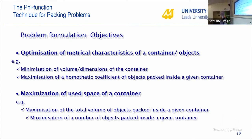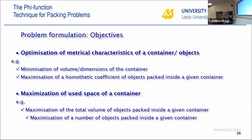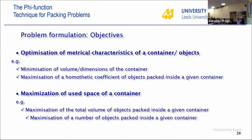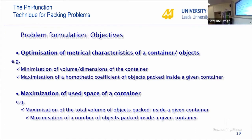In an optimization program, we have objects, budget domains, constraints, and objectives. There are two kinds of objectives: optimization of metric characteristics of the container or object — for example, finding minimum volume or minimizing the size of a container or its radius — and maximization of the use of space, such as maximizing the number of objects that can be packed within a given volume.